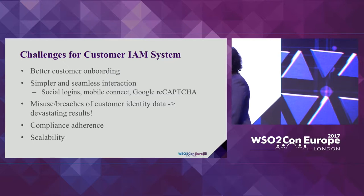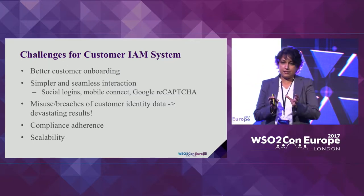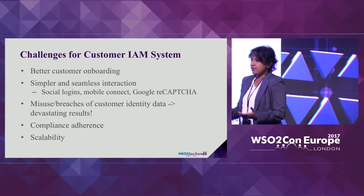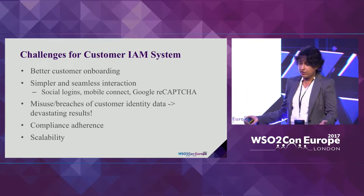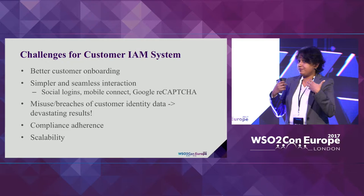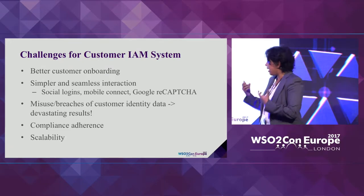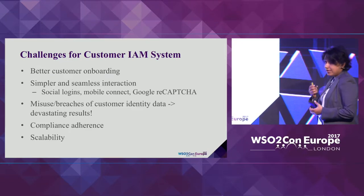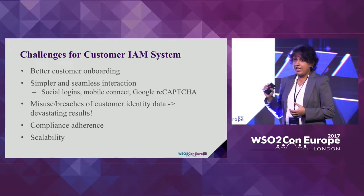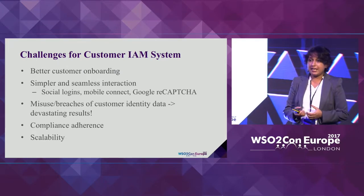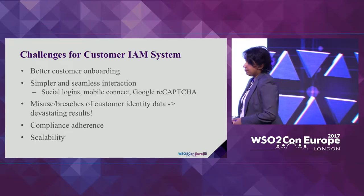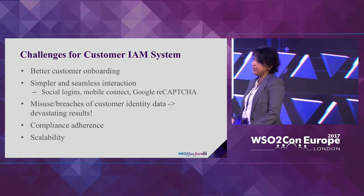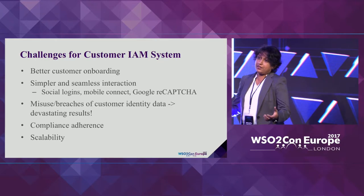The next challenge is scalability. A workforce-facing IAM program may only scale to tens of thousands — maybe 2,000 to 4,000 users. But if your business becomes very popular, your customer IAM program should scale to millions. When picking an IAM system, you should carefully consider how much load it can handle, how many authentication requests it can serve, whether it's scalable, whether it can operate in active-active mode, run on multiple data centers, and scale across geographies.